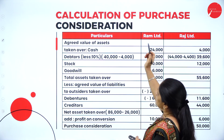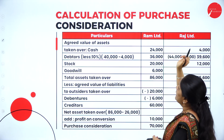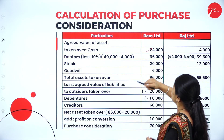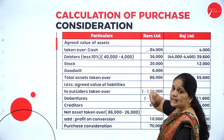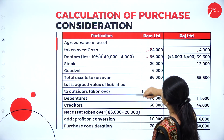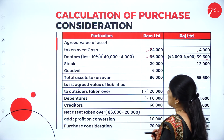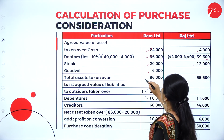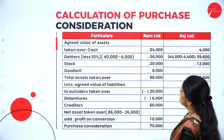Using the net asset method, we find the agreed value of assets of Ram Limited and Raj Limited. Cash: Ram Limited 24,000, Raj Limited 4,000. Debtors are taken at 10% less: 40,000 minus 4,000 equals 36,000 for Ram Limited, and 44,000 minus 4,400 equals 39,600 for Raj Limited. Stock: 20,000 and 12,000. Goodwill 6,000. Total assets: 86,000 and 55,600.